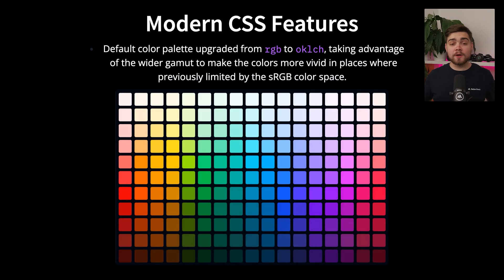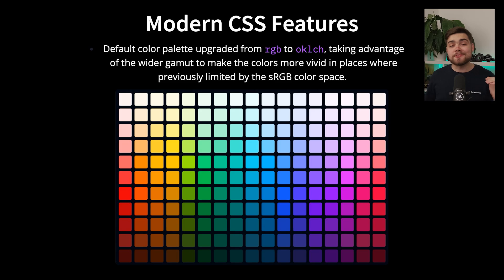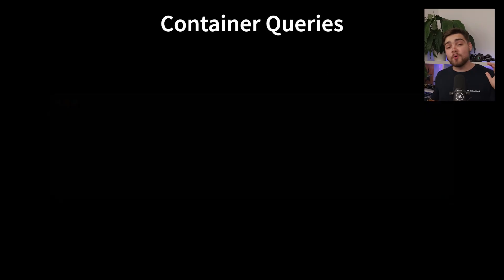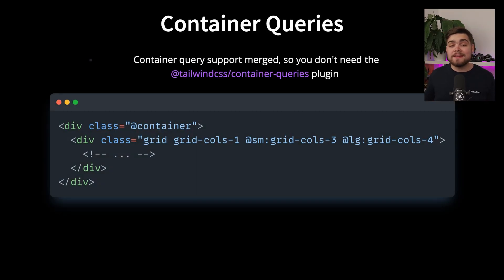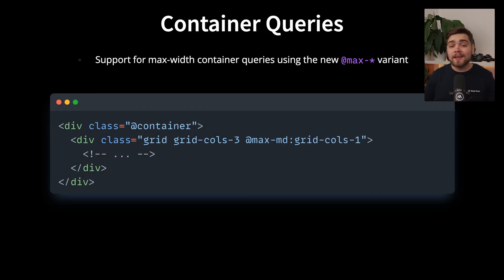The default color palette got an upgrade moving from RGB to OKLCH, to take advantage of a wider color gamut and make colors more vivid where they were previously limited by the RGB color space. Container query support has also been merged in, so you no longer need the Tailwind container queries plugin — and that comes with support for max-width container queries as well.